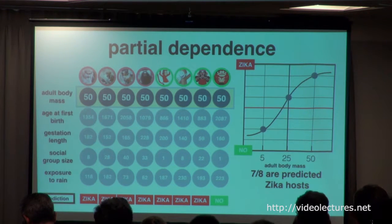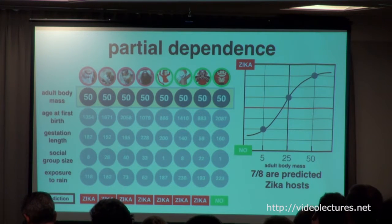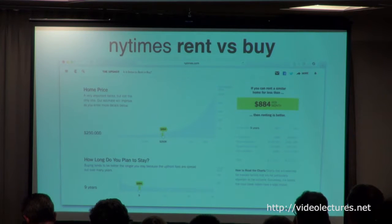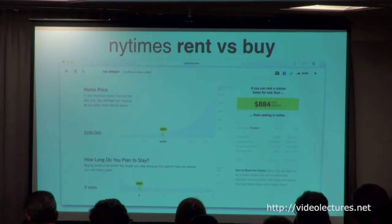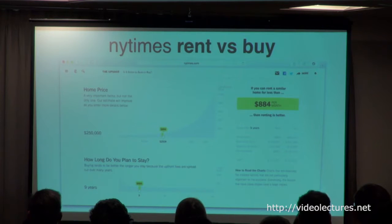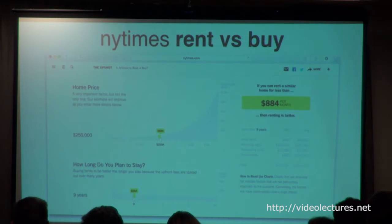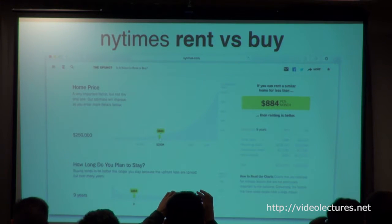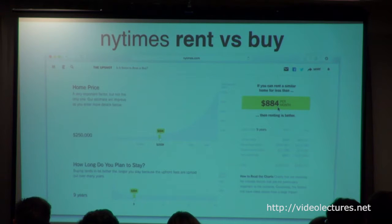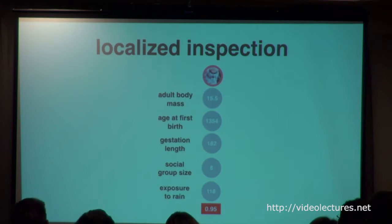We're going to leverage partial dependence and make it interactive as part of the tool — I'll show you a demo in a bit. One of our inspirations was a nice feature on the New York Times: a rent versus buy calculator where you can play with variables like home price, how long you plan to live there, interest rate, and HOA fees, and it gives you an idea of whether you should rent or buy. It was nicely interactive, and this inspired what we're calling a localized inspection.